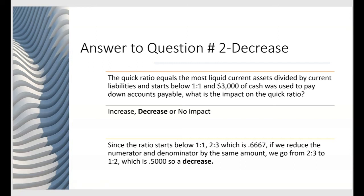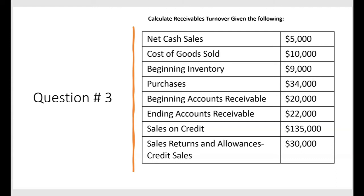When the exam gives you a transaction and asks for the impact on a ratio, watch out for when the numerator and denominator go up or down by the same amount — because the ratio will be impacted. Now for a different type of ratio question: they give you financial statement figures and ask you to calculate the receivables turnover ratio. They usually give you far more information than you need, so you have to take what you need and leave the rest.